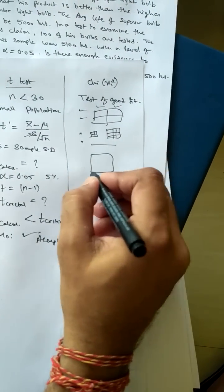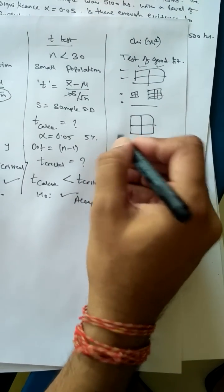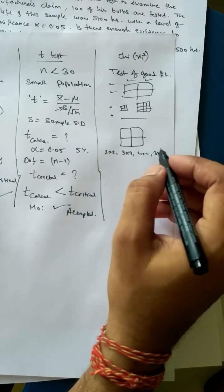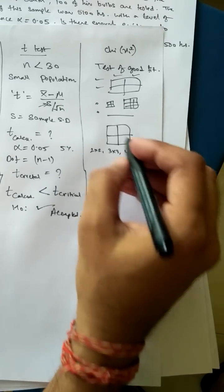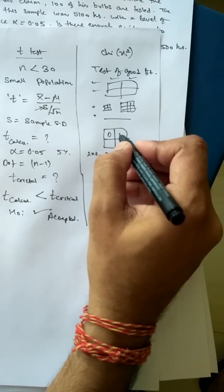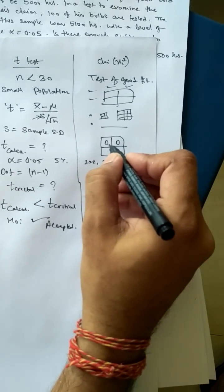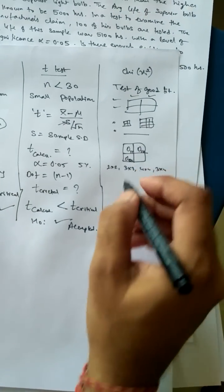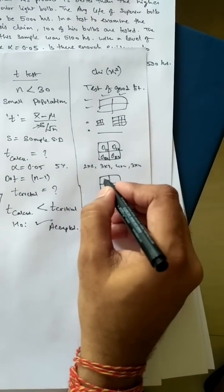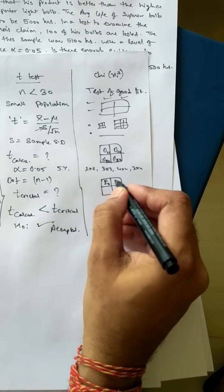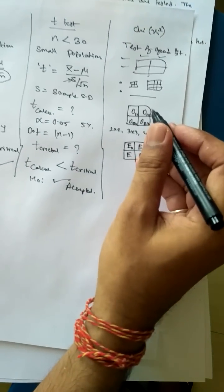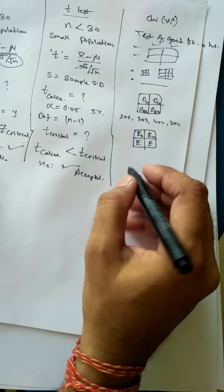Let us discuss the matrix problem. For a matrix problem, you may be given a matrix of 2×2, 3×3, 4×4, or 3×4 — any matrix can be given. The values inside the matrix are called the observed frequency, and the values you need to calculate are called the expected frequency. Let us see how to calculate the expected frequency from the observed frequency with a given example.